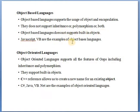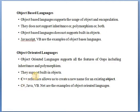JavaScript and VB are examples of object based languages. Object oriented languages support all the features of OOP including inheritance and polymorphism. They support built-in objects — when we create one class we can create a number of objects of that class. C++ reference allows us to create a new name for an existing object. C#, Java, and VB.NET are examples of object oriented languages.